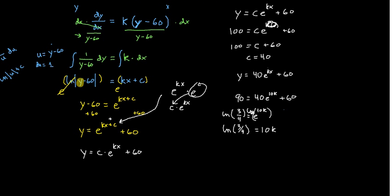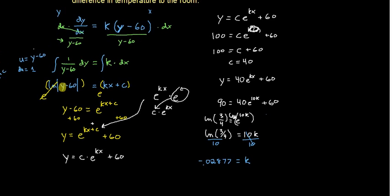Give me a new color here. It's a lot of white. The 10s go away. And that is just something you can do on your calculator. It looks like we get negative 0.02877. Alright, so now we have our equation here.